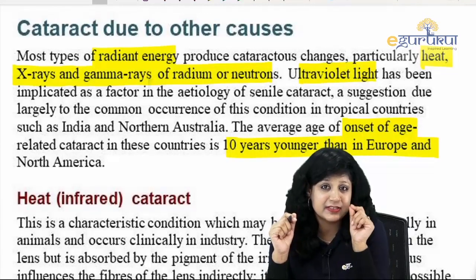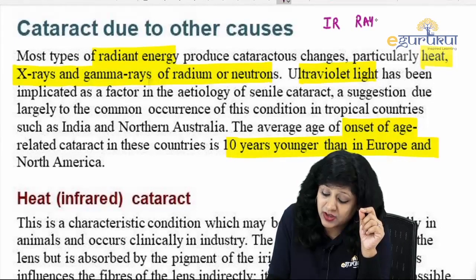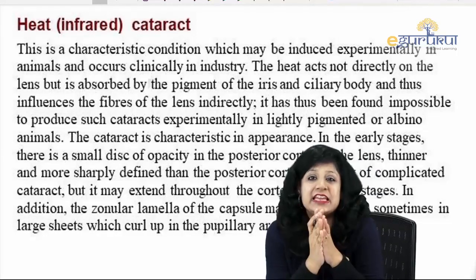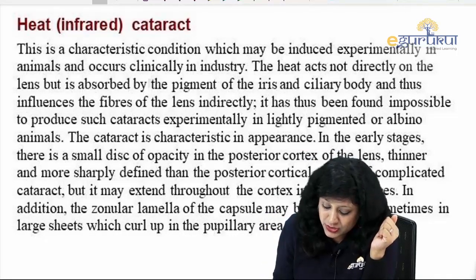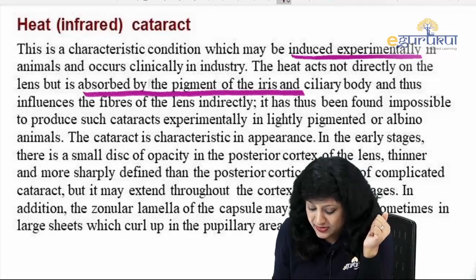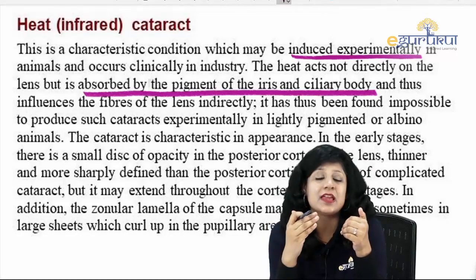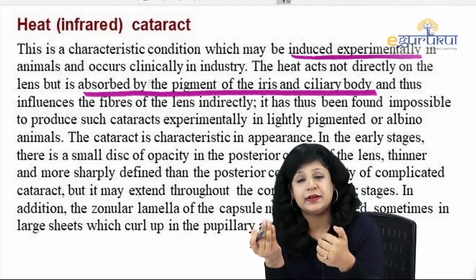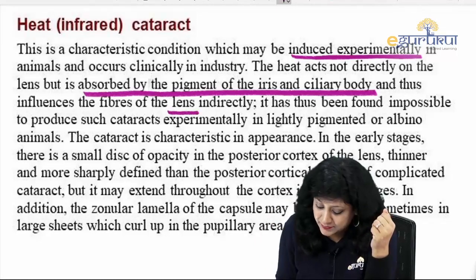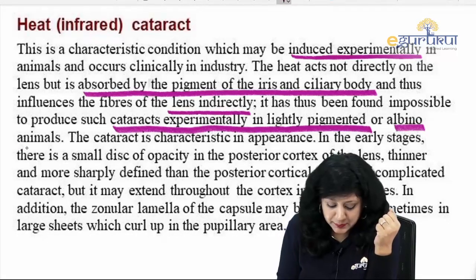A question for the comment section: what is the name of the cataract caused by infrared rays? Heat is your infrared cataract — this is a characteristic condition that may be induced experimentally. The heat acts not directly on the lens but is absorbed by the pigment of the iris and ciliary body. Only filtered or indirect radiations reach the lens. It has been found impossible to produce such cataracts experimentally in lightly pigmented or albino animals.